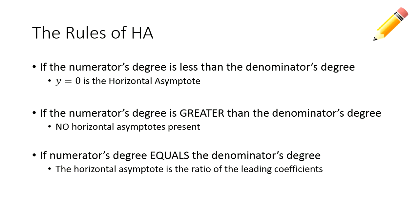There are also horizontal asymptotes, abbreviated HA. There are three rules. One: if the numerator's degree is less than the denominator's degree, y equals 0 is a horizontal asymptote, meaning it goes left and right at y equals 0. Two: if the numerator's degree is greater than the denominator's degree, there is no horizontal asymptote at all. Three: if the numerator's degree equals the denominator's degree, find the ratio of the two leading coefficients. Let's look at some examples to make this make more sense.